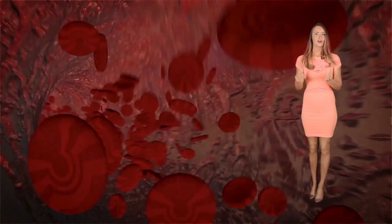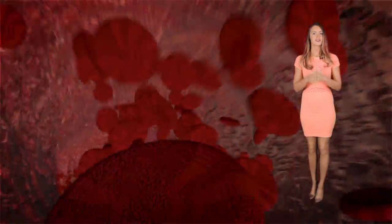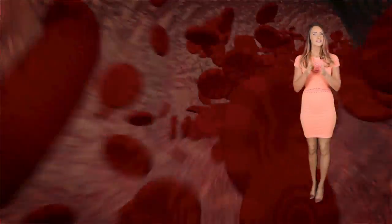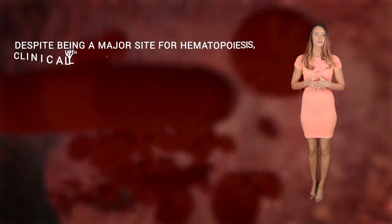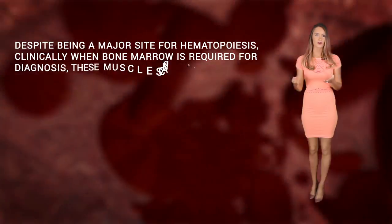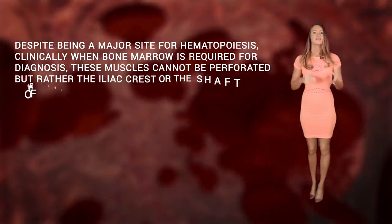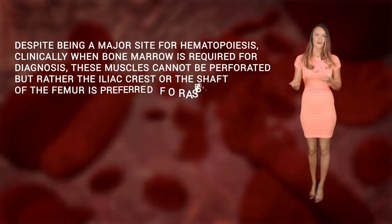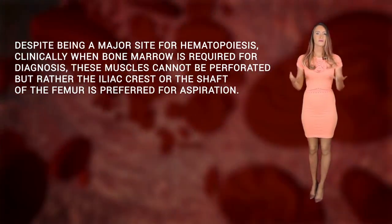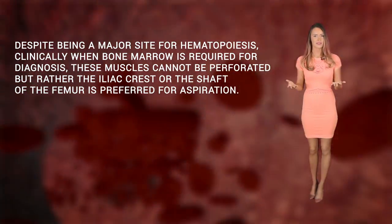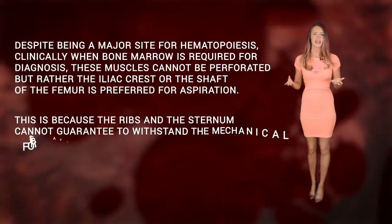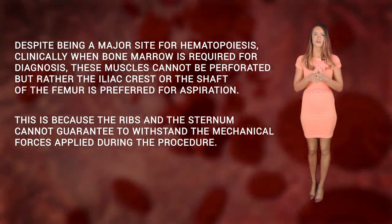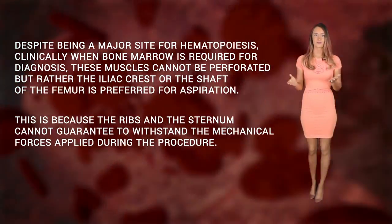When a person reaches adulthood, the sternum and ribs are major sites of hematopoiesis, which is the process that creates blood. Despite being a major site for hematopoiesis, clinically when bone marrow is necessary for diagnosis, this is not a preferred aspiration site because the muscles covering it cannot be penetrated, and the ribs and sternum most of the time cannot withstand the medical forces applied during the procedure.